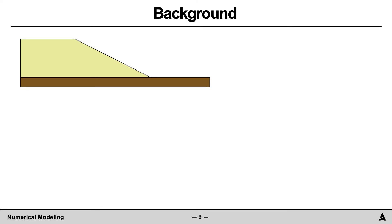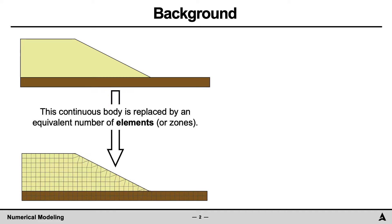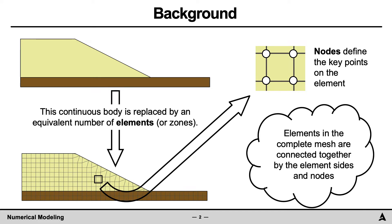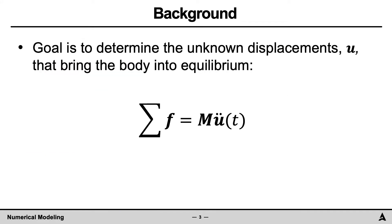To begin, consider a two-dimensional continuum. As an example, consider the slope shown in which the response will be determined numerically. To accomplish this, this continuous body is first replaced by a number of elements. Focusing on a single element, the nodes define the key points on that element. The elements in the complete mesh are connected together by the element sides and nodes. For this numerical mesh, the goal is to determine the unknown displacements U that will bring the body into equilibrium.